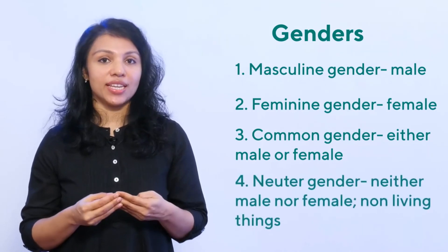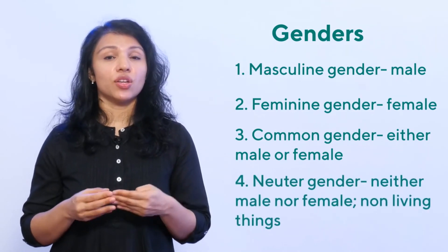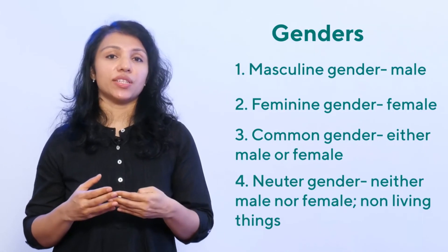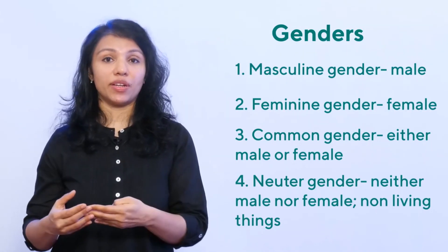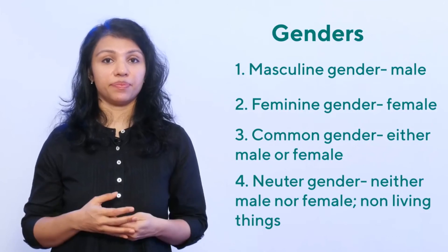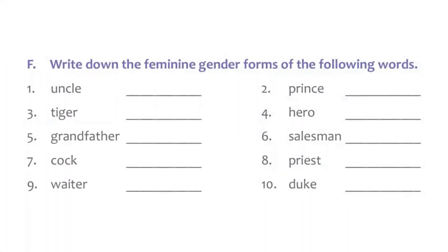The fourth one is neuter gender. This is normally a non-living thing which cannot be categorized as a male or a female. For example, chair.